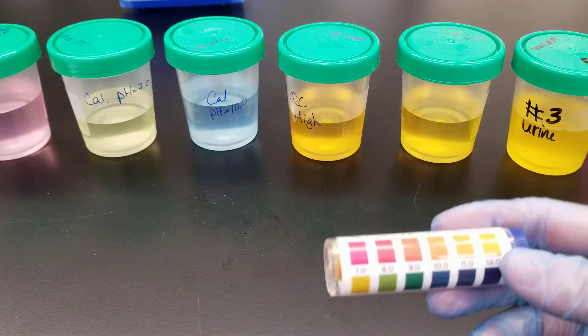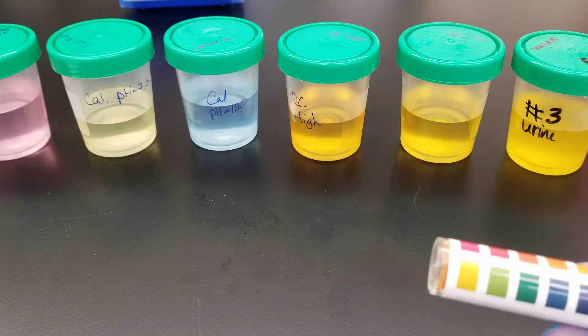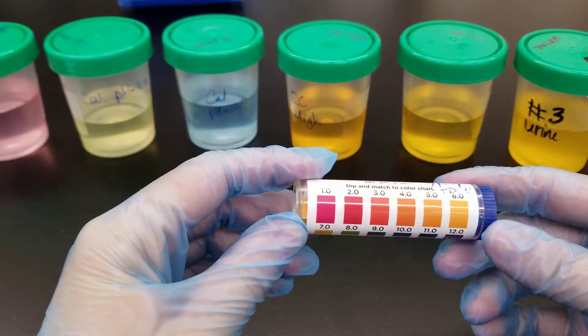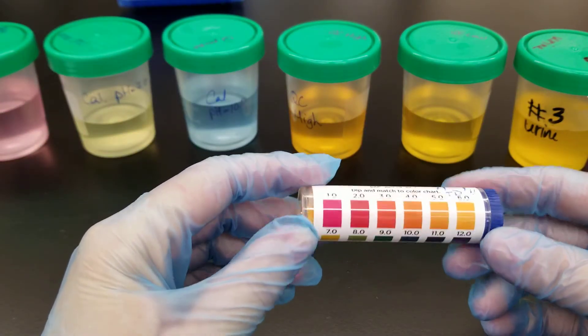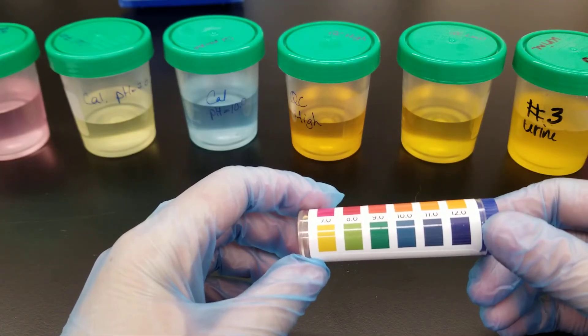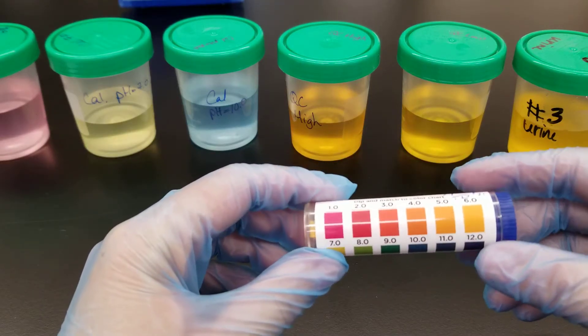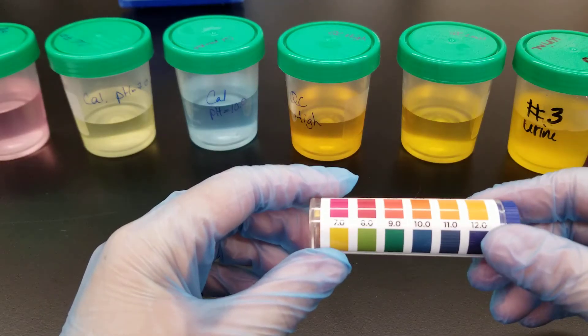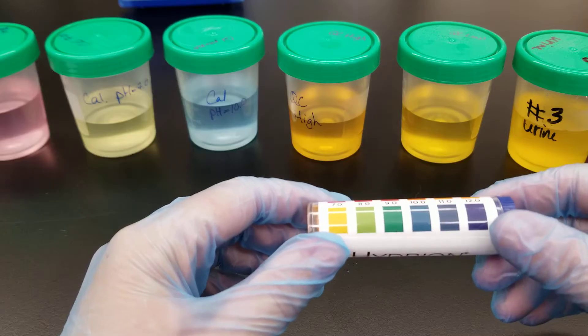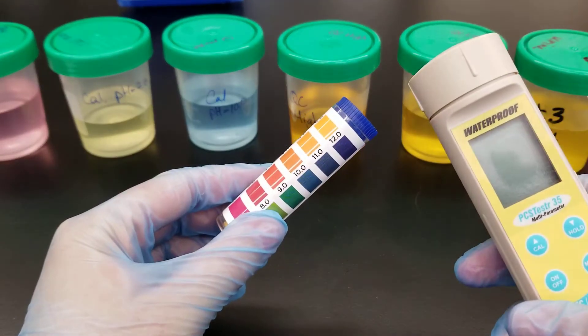Hello everyone. Today we're going to be measuring pH using pH paper. As you can see, this is a manual and biased type of analysis, which means that it all depends on the user's interpretation of color, which is not as accurate as the pH meter that we did in the other video.